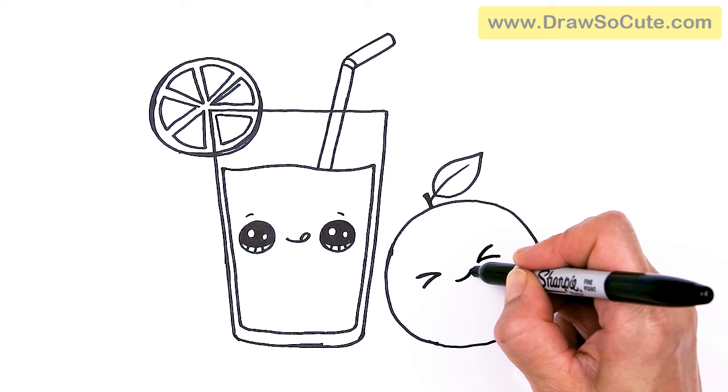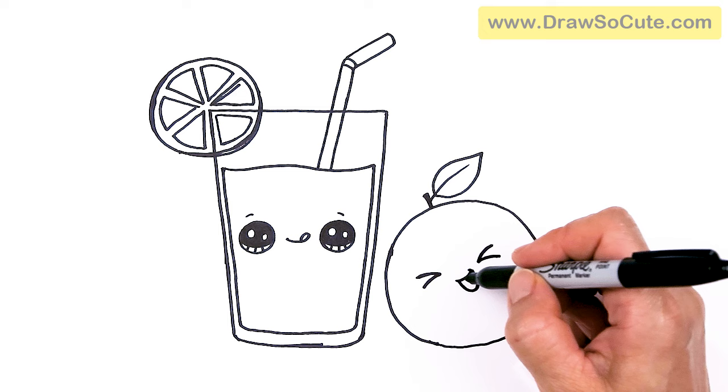Draw a curve. Cap it off. And then we're just going to draw this big U. And put a little tongue in there. And two small curves.